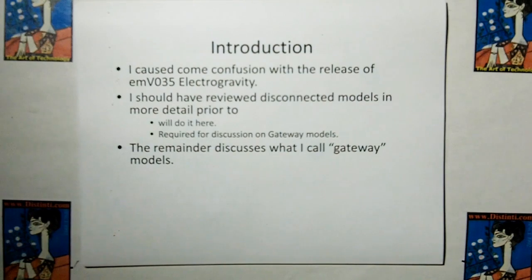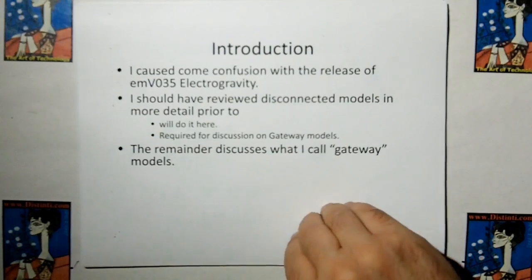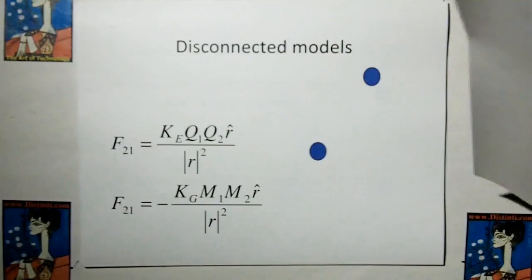The number one reason for reviewing disconnected models is because there was some confusion with the release of the first electrogravity video. There is part number two coming after this video. I should have reviewed disconnected models in more detail prior to that video, but I'm going to do it here anyway. It's a required discussion for gateway models. In the remainder of this video, we're going to discuss what I call gateway models.